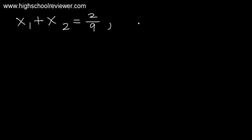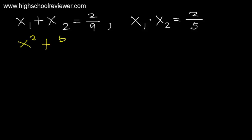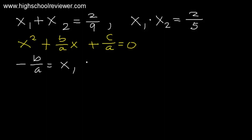Find the quadratic equation using x sub 1 plus x sub 2 and x sub 1 times x sub 2. Our given: x sub 1 plus x sub 2 equals 2 over 9, and x sub 1 times x sub 2 equals 2 over 5. One form of a quadratic equation is x squared plus b over a times x plus c over a equals 0. We know that negative b over a equals x sub 1 plus x sub 2, and c over a equals x sub 1 times x sub 2.